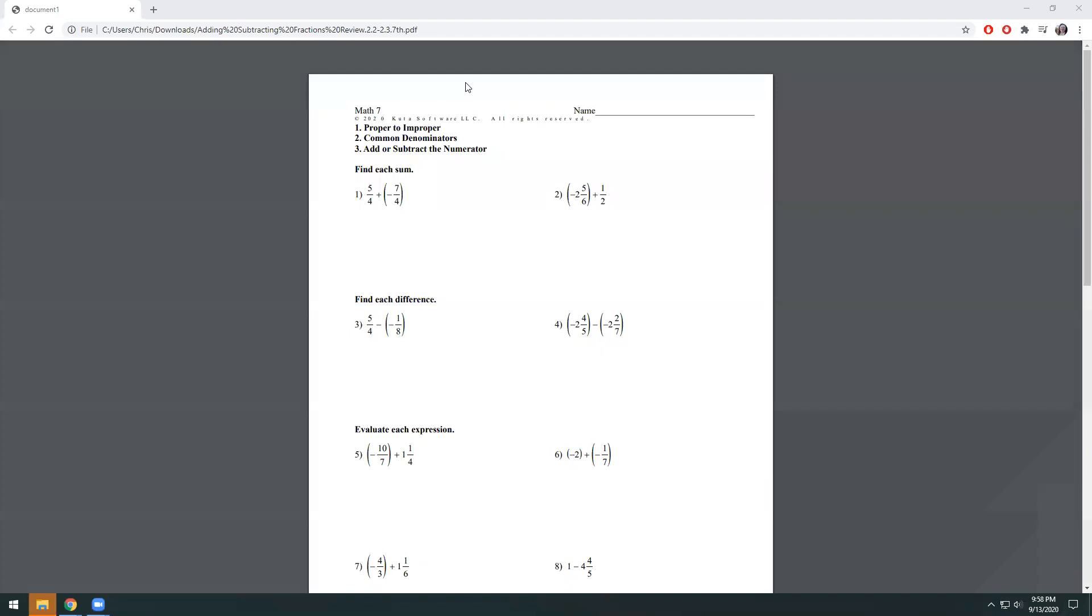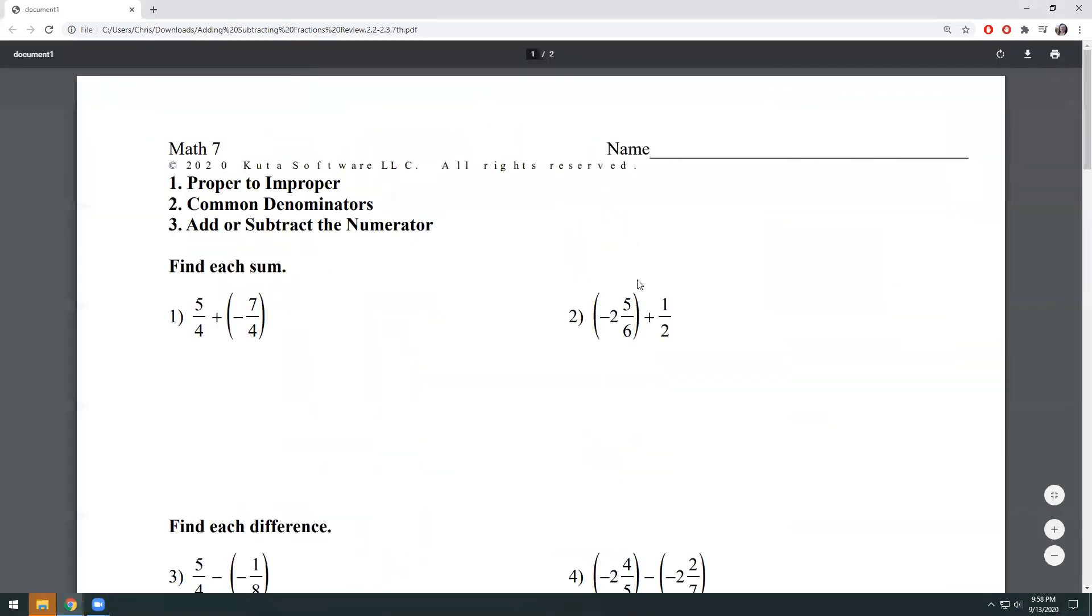We have five over four plus negative seven over four. So the first thing I'm going to ask myself is, are there any proper fractions that I need to turn improper? Since there's no big number out front, kind of like how there is in number two, I know that I don't have to do that step.